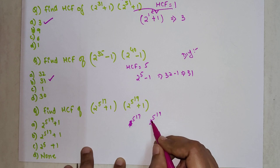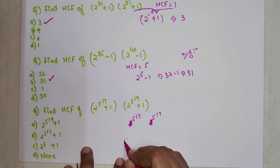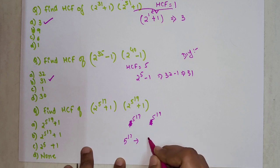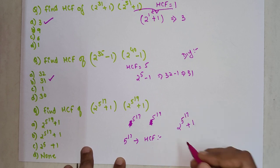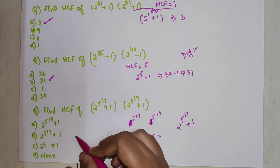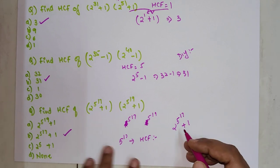We write down 5^17 and 5^19. Among these, 5^17 is the HCF. So my final answer will have 2^(5^17) + 1. Option B is the correct option.